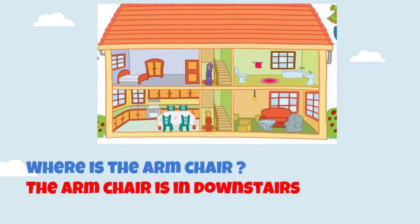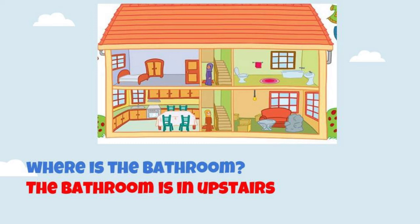Okay friends, please look at my new house. Perhatikan rumah baruku. Where is the armchair? Dimanakah letak sofa? The armchair is in the downstairs — sofa itu ada di lantai bawah. And where is the bathroom? Dan dimanakah letak kamar mandi? The bathroom is upstairs — kamar mandi ada di lantai atas.